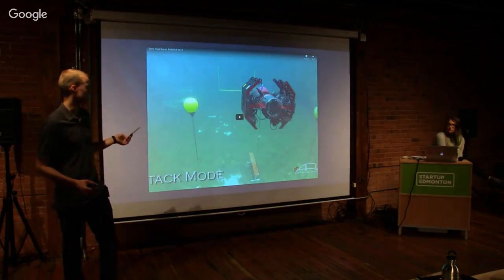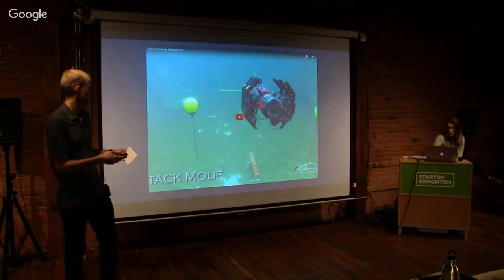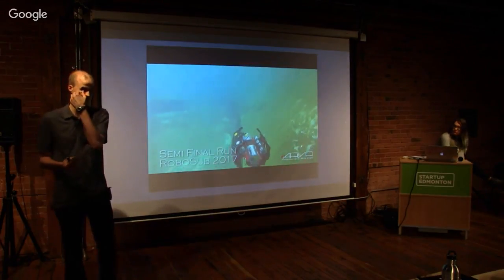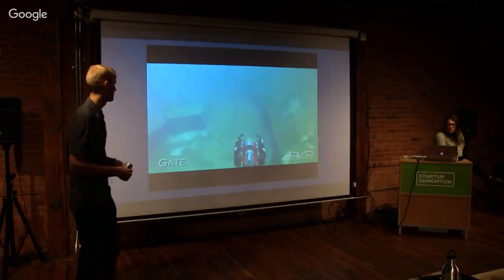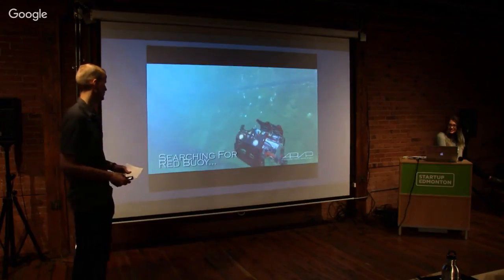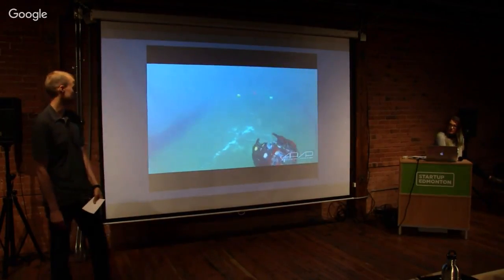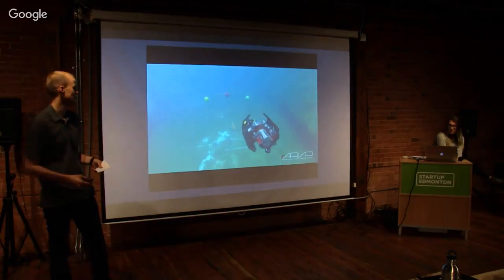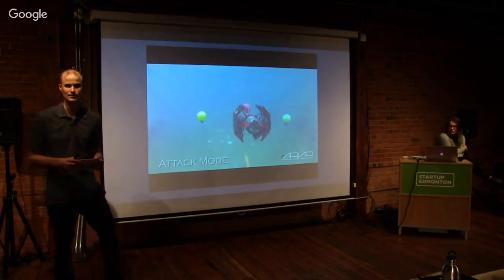This video is from the competition this summer — our semifinal run from last year, showing the robot doing the buoy task using our detector. In the initial phase it just drives through the first gate. Then it searches for the buoys, goes for the red buoy first, hits it, backs up, then goes for the yellow buoy and the green buoy. I can start answering questions now.